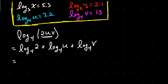Log base 4 of 2 — what's that going to be? 4 to the one-half, the square root of 4 equals 2, so that's going to be one-half. Plus log base 4 of u from upstairs, that's going to be 3.2. Plus log base 4 of v is going to be 1.3.